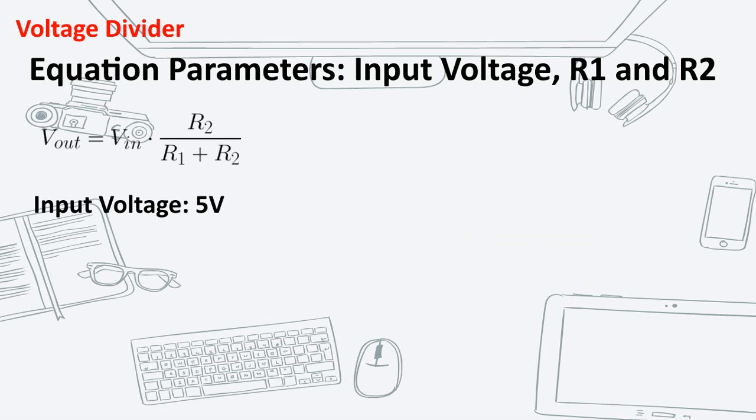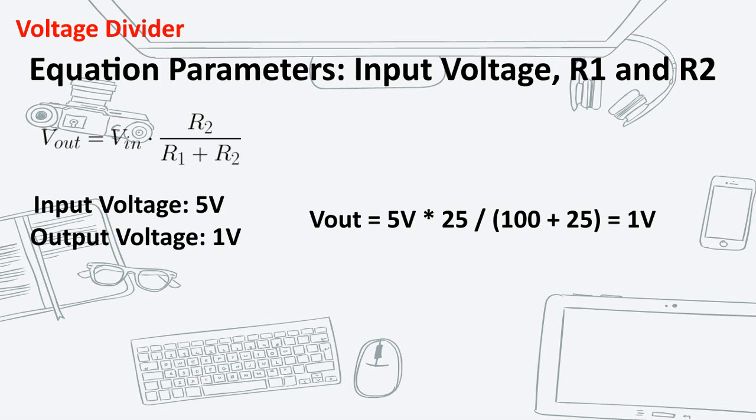Say, you have an input voltage of 5 volts, and you only need 1 volt. Reset R1 to 100 ohms, and R2 to 25 ohms.